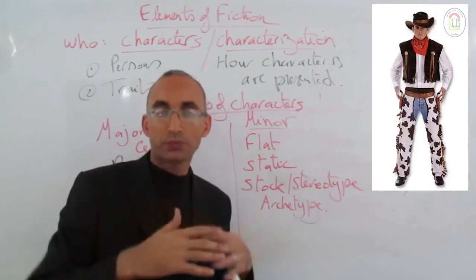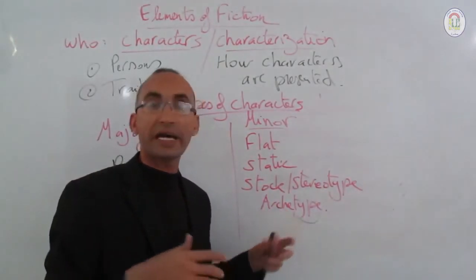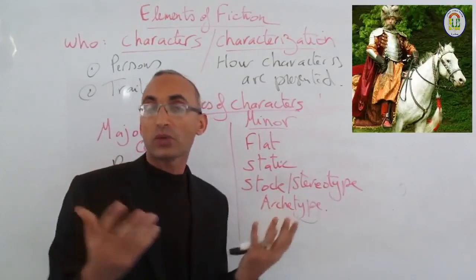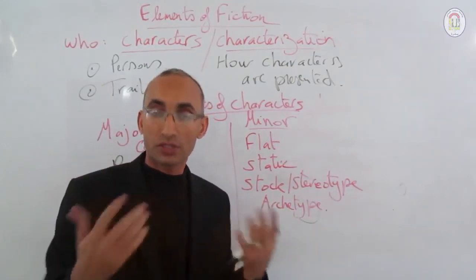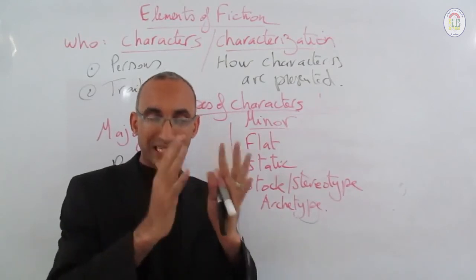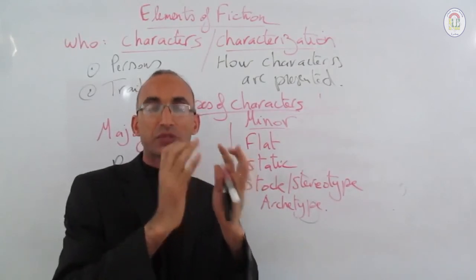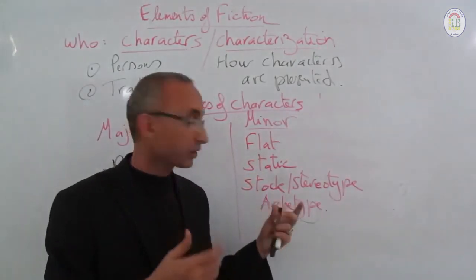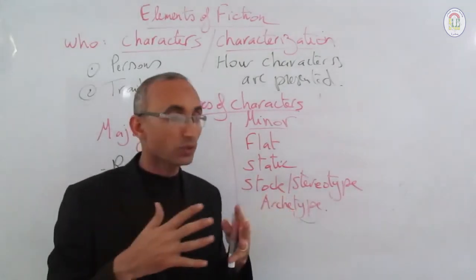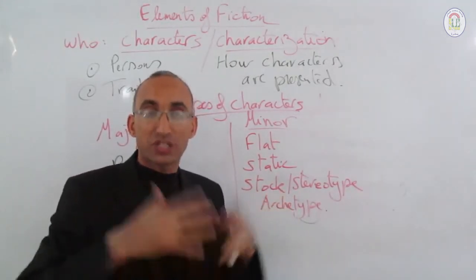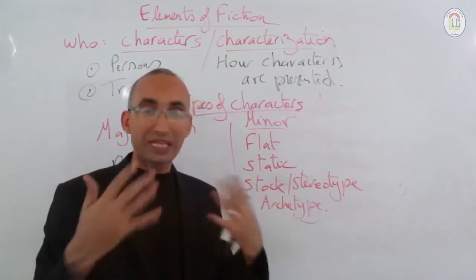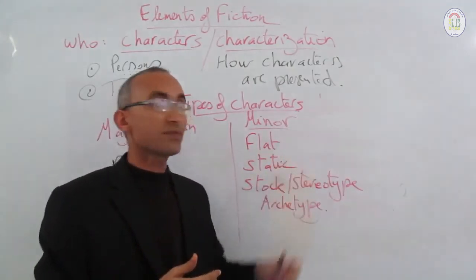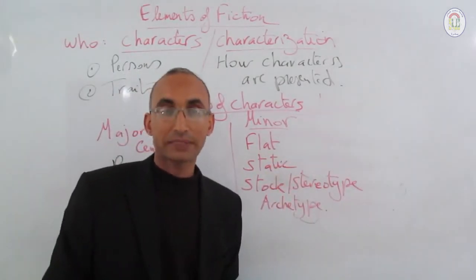Stock, stereotype, and archetype characters each represent a particular figure or quality. For example, the cowboy who is always brave, or the knight in chivalry stories who is always noble, brave, courageous, and courteous — these same features never change. We also have the witch, who is always ugly, vengeful, envious, and jealous. All these represent fixed qualities for this type of minor character.